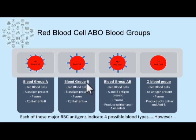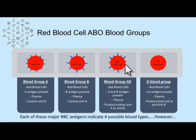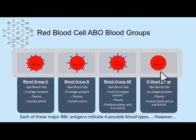Our next blood type, blood type B, is the result of B antigens on the surface of these people's red blood cells. Because blood group B people do not have A antigen present, their plasma will contain anti-A. Our next blood group is AB, where individuals have both A and B antigens present on the surface of their red cells. Because these people have both A and B antigens, they will produce neither anti-A nor anti-B in their plasma. Our last blood group is blood group O, where people have neither A nor B antigen on the surface of their red cells, so they will produce antibodies to both A and B antigens.